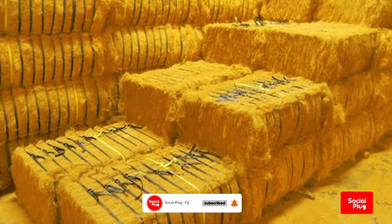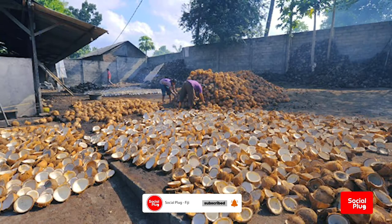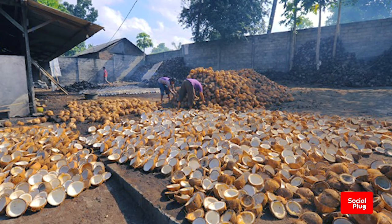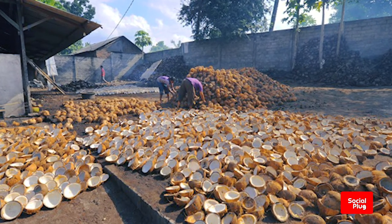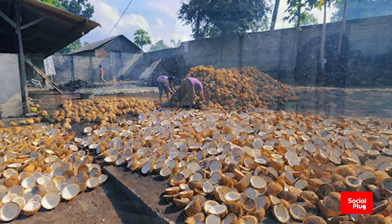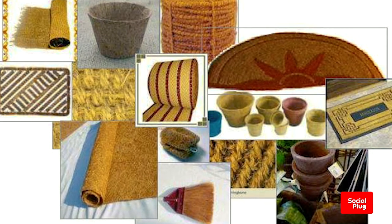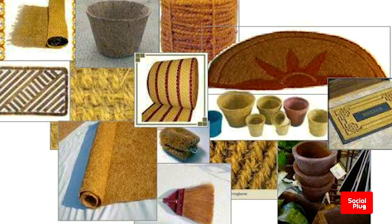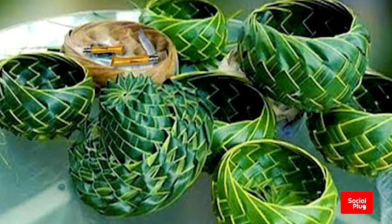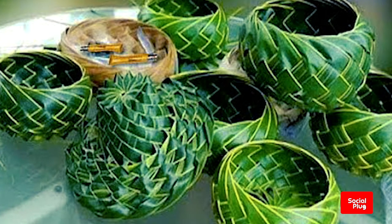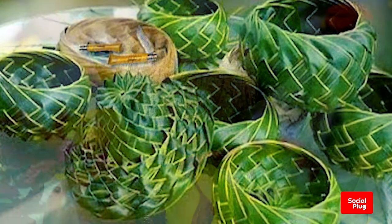Mature ripe coconuts can be used as edible seeds or processed for oil and plant milk from the flesh, charcoal from the hard shell, and coir from the fibrous husk. Dried coconut flesh is called copra, and the oil and milk derived from it are commonly used in cooking — frying in particular — as well as in soaps and cosmetics.